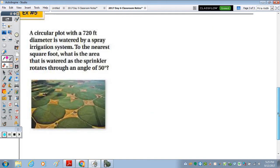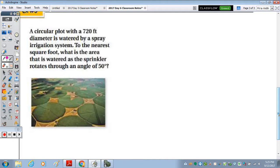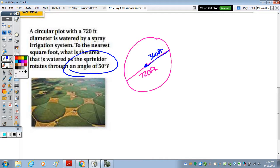And then last, the circular plot with a 720 foot diameter is watered by a spray irrigation system. To the nearest square foot what is the area that is watered as the sprinkler rotates through an angle of 50 degrees? So you can draw one of these separate circles. The diameter is 720 feet, so that means our radius is going to be 360 feet. We have the sprinkler rotating at an angle of 50 degrees, so we are going to find what is the area that is watered as the sprinkler rotates through that degree measure.